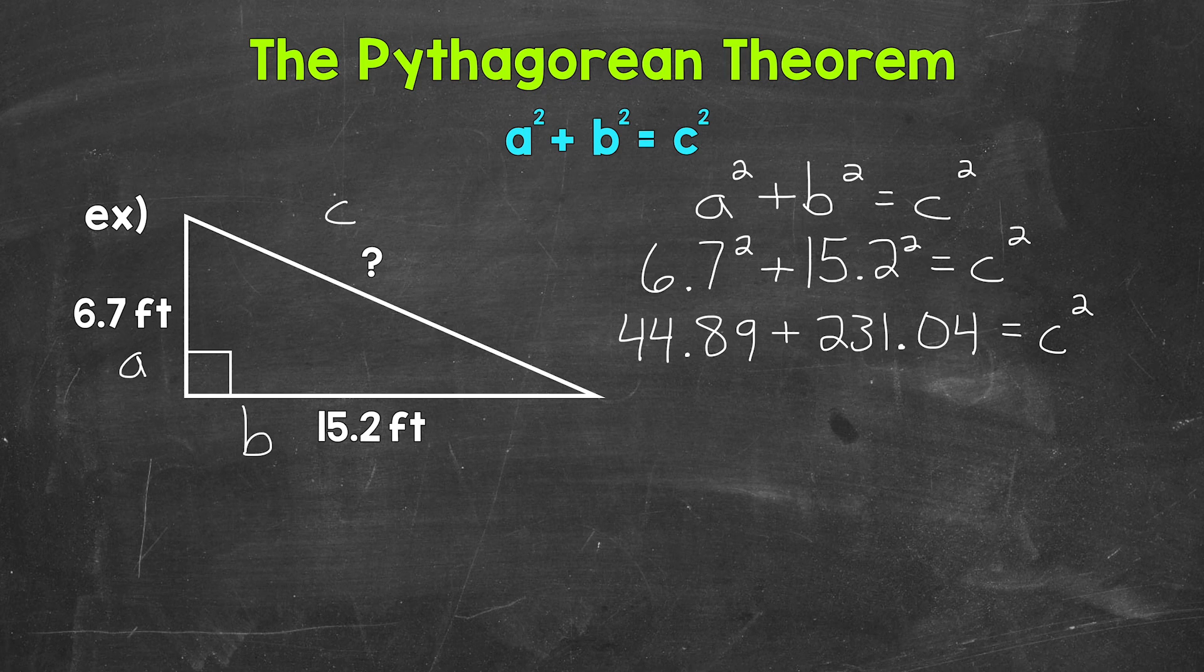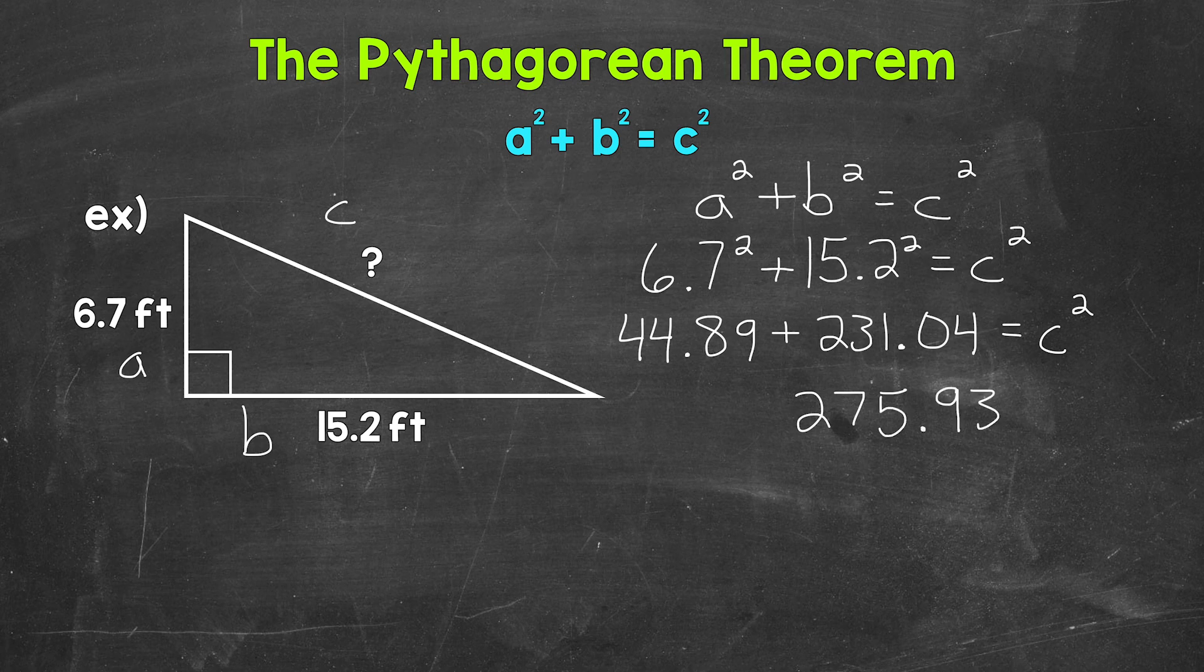Now we can add what's on the left side of the equation. So 44.89 plus 231.04. That gives us 275.93 equals c squared.